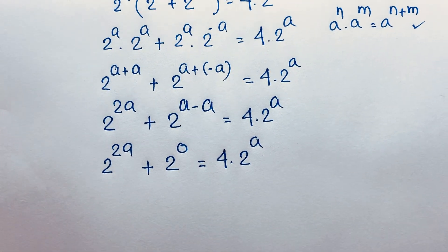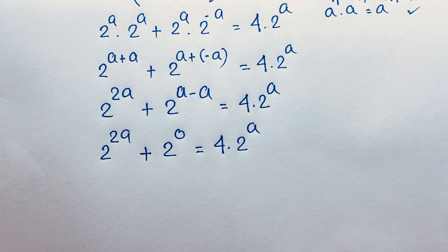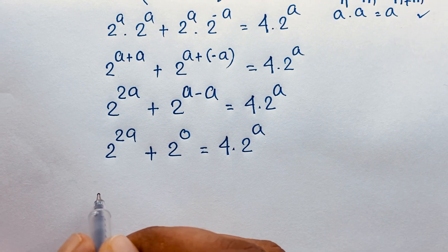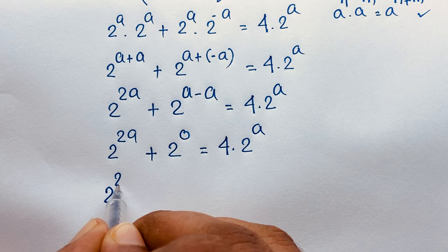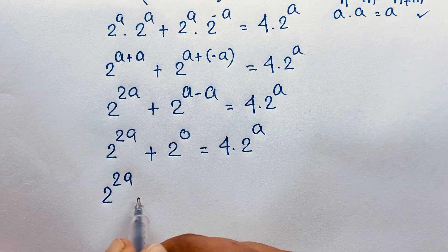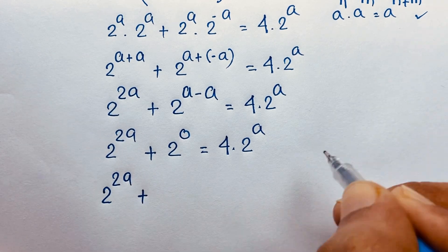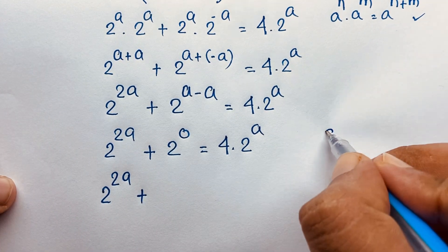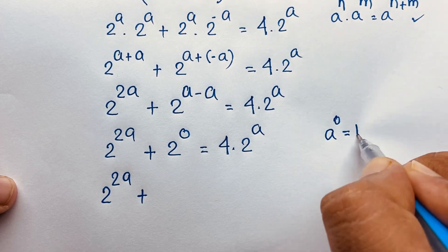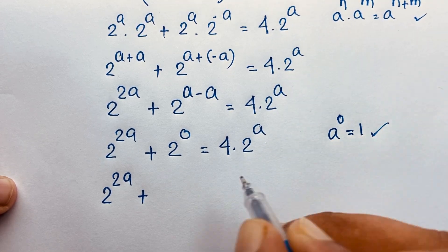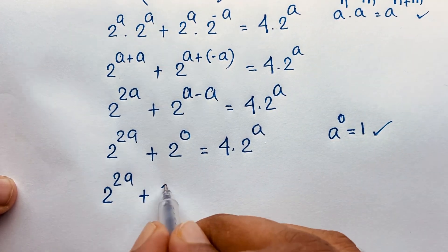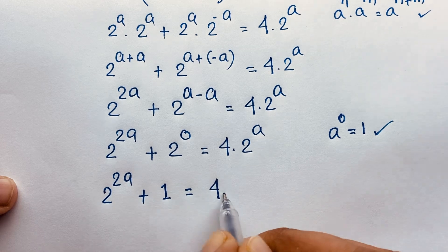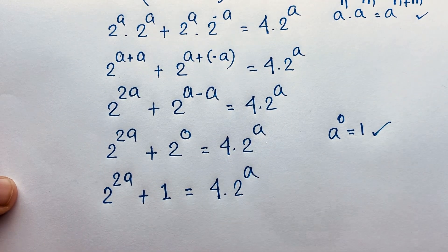You can see here 2 to the power 2a, and 2 to the power 0. Using the exponential formula, a to the power 0 equals 1. So 2 to the power 0 equals 1, giving us 2 to the power 2a plus 1 equals 4 times 2 to the power a.